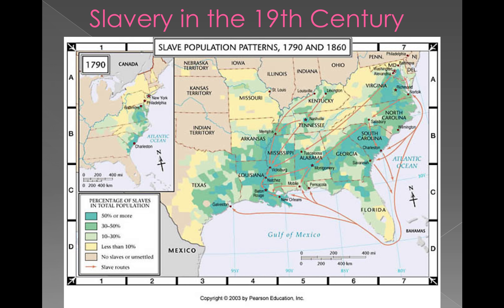This map highlights the expansion of slavery from the ratification of the Constitution until the outbreak of the Civil War. Notice that between the years 1790 and 1860, the slave population grew from 700,000 to 4 million — a dramatic increase. With the expansion of slavery, we see an expansion of slave culture and a distinctive African-American community that comes along with it.